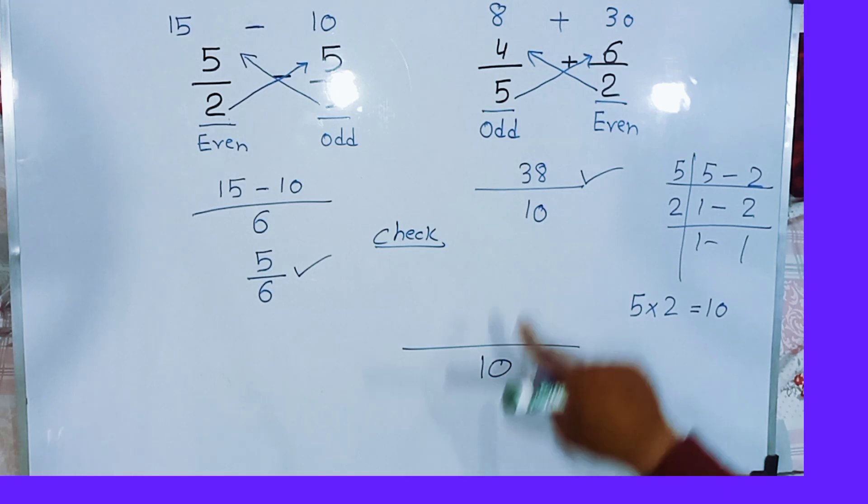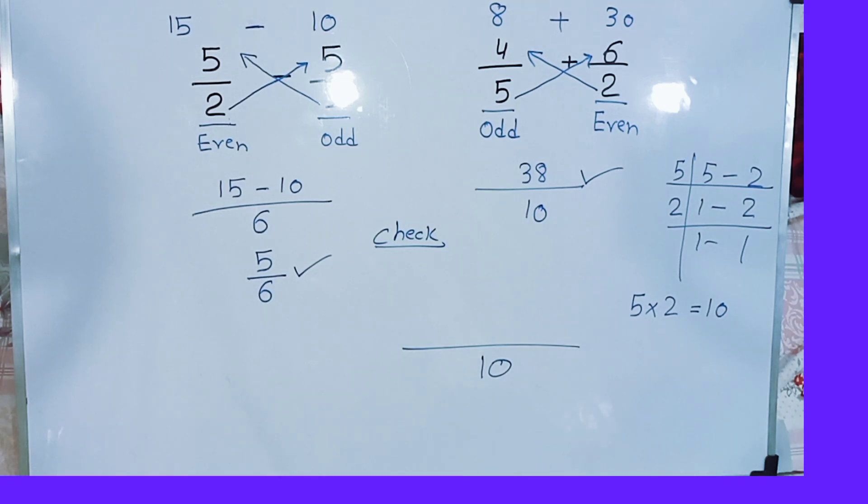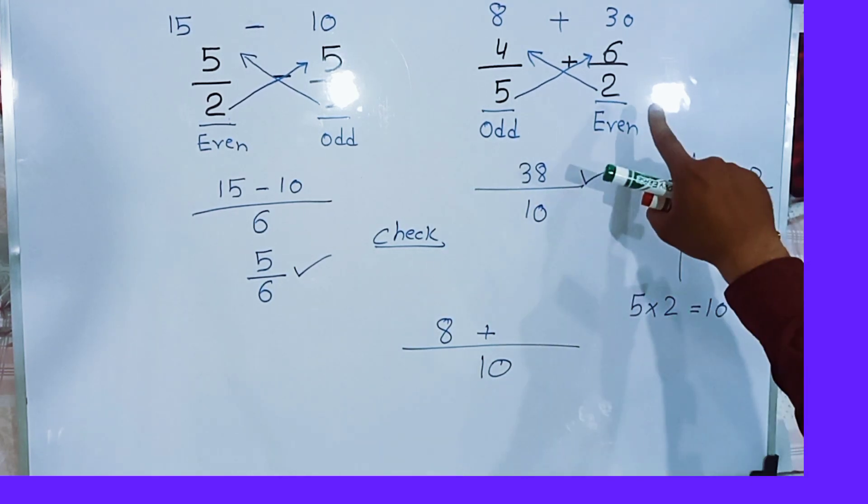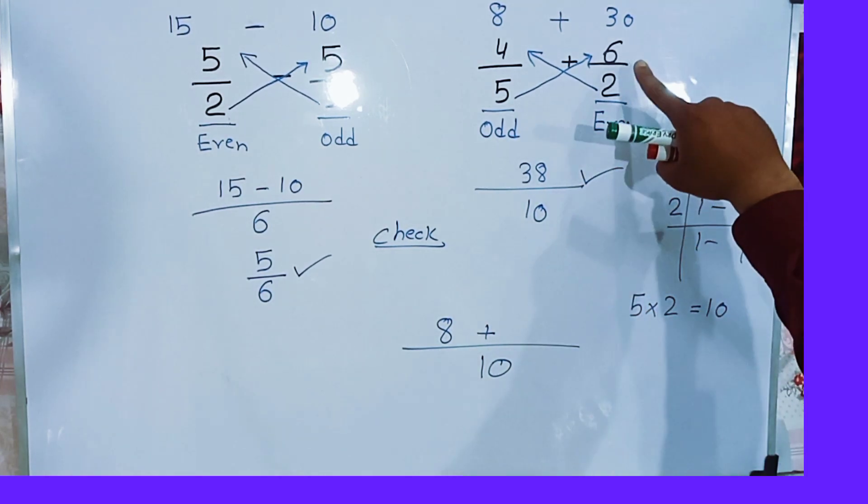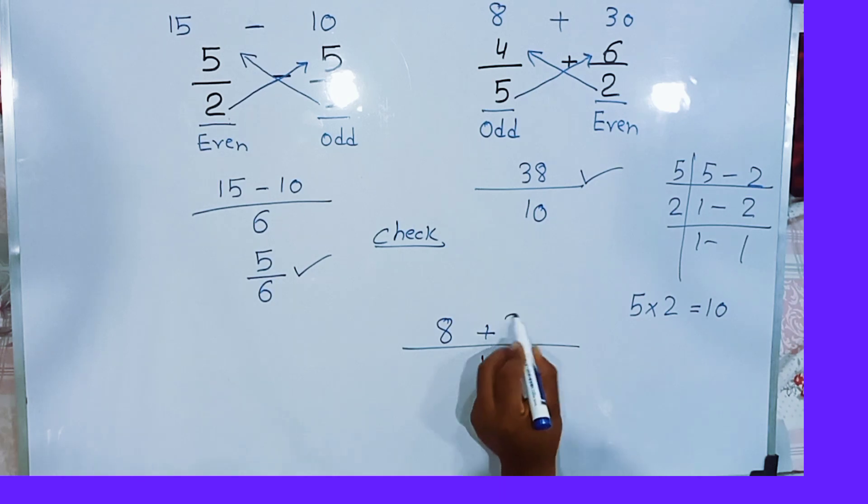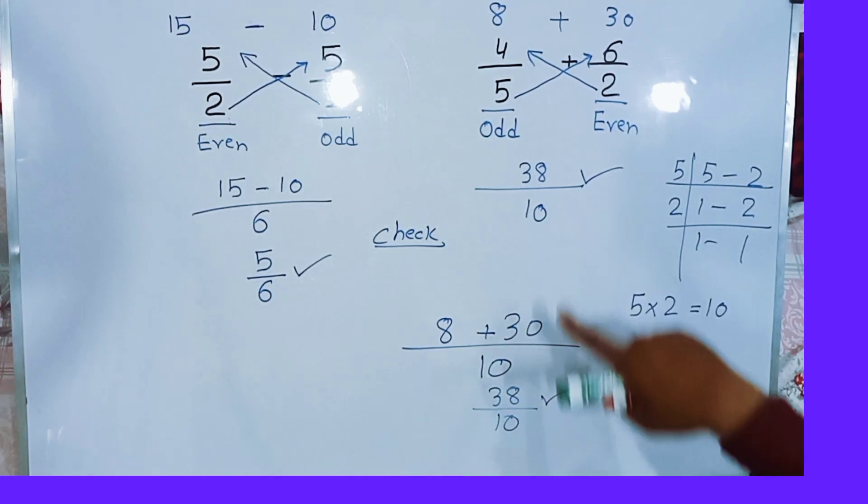Now we will divide 10 with 5. When we divide 10 with 5, we will get 2, and 2 multiplied by 4 is 8. Plus, now divide 10 with 2. When we divide 10 with 2, we will get 5, and now 5 multiplied by 6, 5 sixes are 30. 30 plus 8 is 38 by 10.